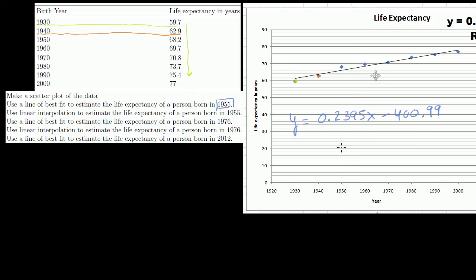So we have two options. We could just eyeball it. 1955 is right there. So if you go up from 1955, you're going to hit the line of best fit right there. If I were to just eyeball it, it looks like it's right there. These are increments of 2, so it looks like about 77 years.